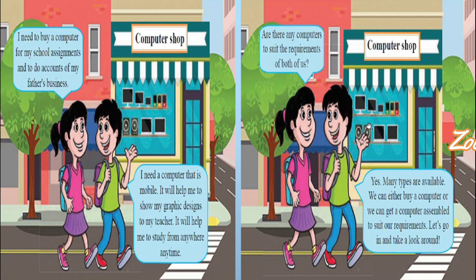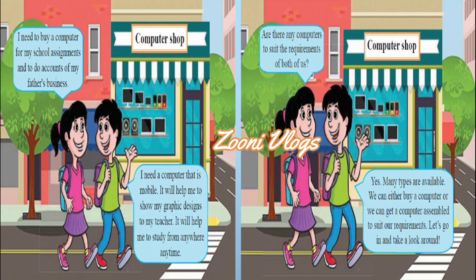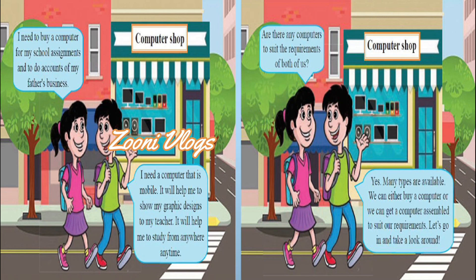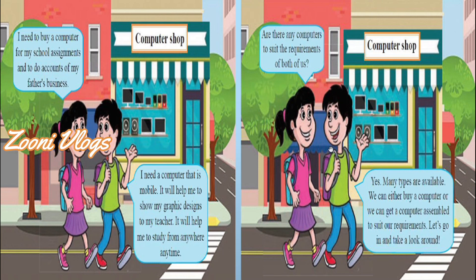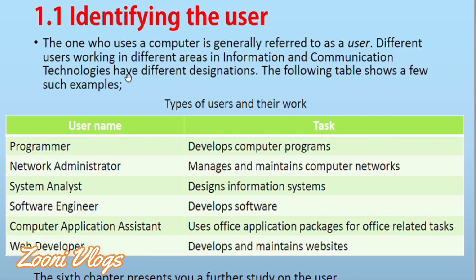The shopkeeper says: 'Many types are available. We can either buy a computer or get a computer assembled to suit our requirements. Let's go in and take a look around.' So they are going to buy a computer which suits their needs. The one who uses a computer is generally referred to as a user.